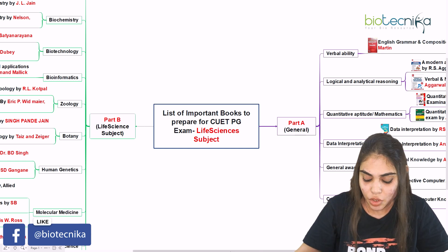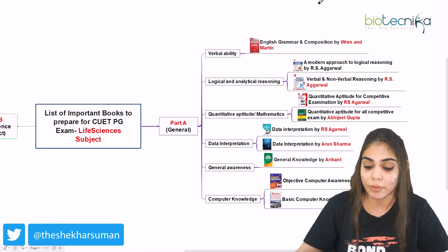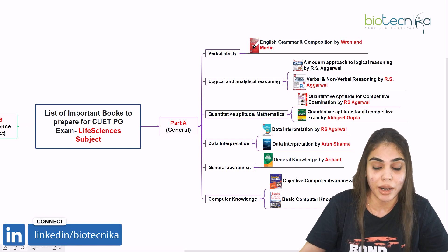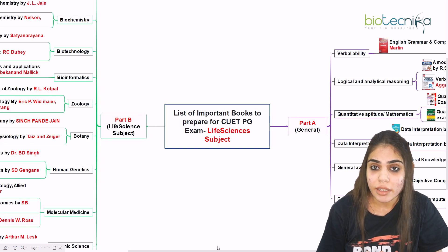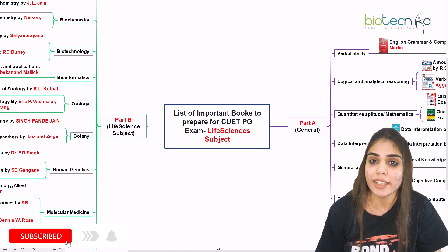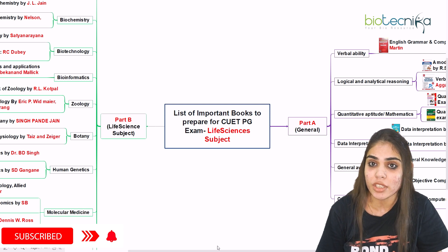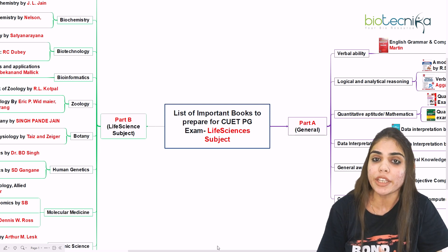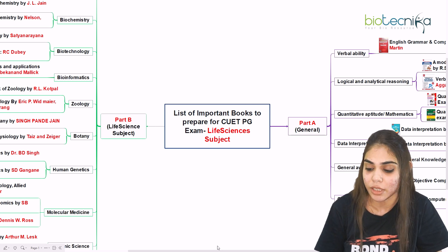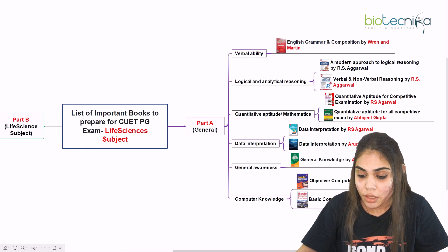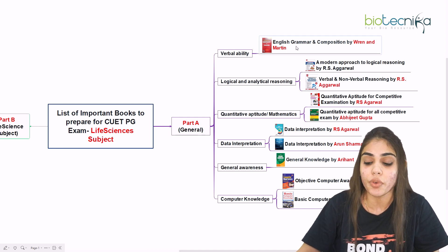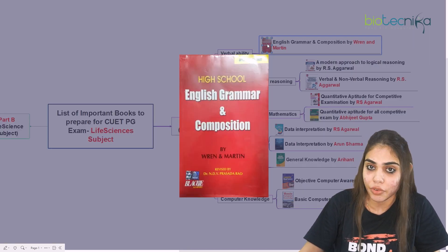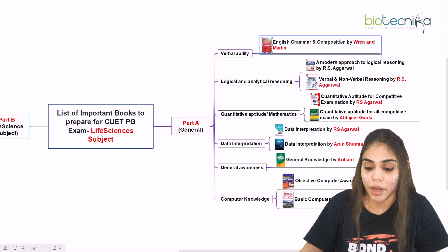Let's talk about the books needed to prepare for verbal ability. For this, you have to go for English Grammar and Composition by Wren and Martin. You can see the book here. You have to refer to this book and cover the verbal ability part.